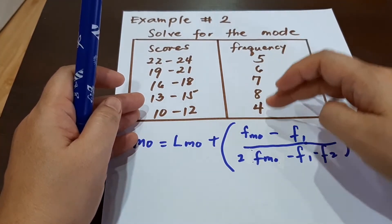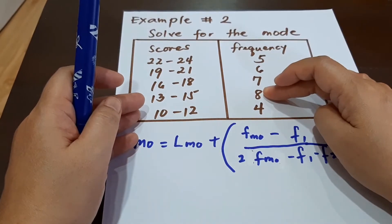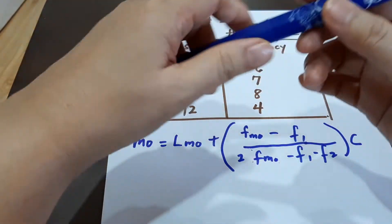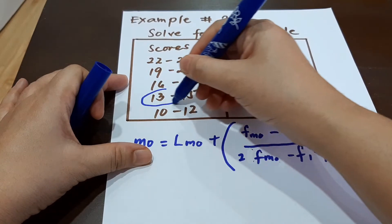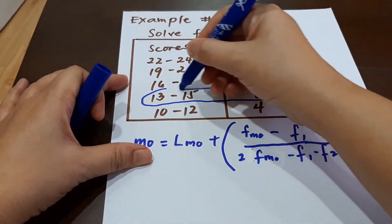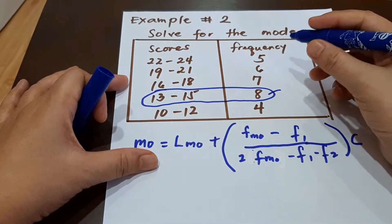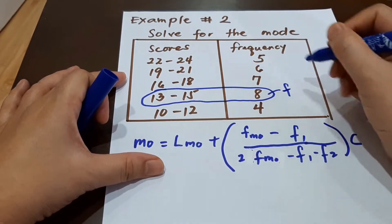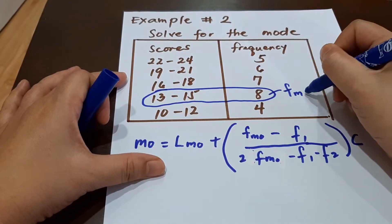We have frequencies of 5, 6, 7, 8, and 4. The one with the highest frequency is this one. So our modal class is 13 to 15, and the frequency of our mode is 8. This is our FMO.